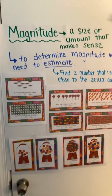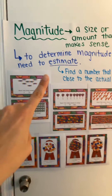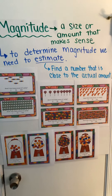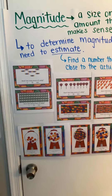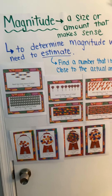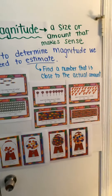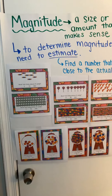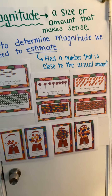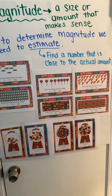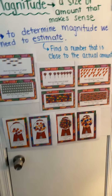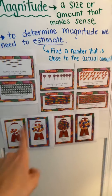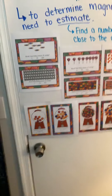Let's look at my anchor chart. Magnitude means a size or amount that makes sense. To determine magnitude, we need to estimate. And estimate means find a number that is close to the actual amount. Here I have some different problems that we're going to do.